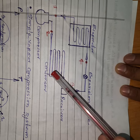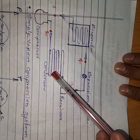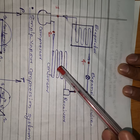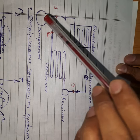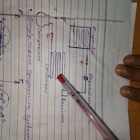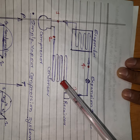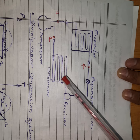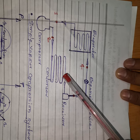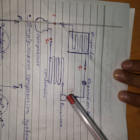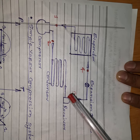In the condenser — either air-cooled or water-cooled — the heat absorbed in the evaporator and the heat added in the compressor is rejected to the atmosphere. There is a phase change in the condenser: vapor refrigerant is converted into liquid refrigerant. Leaving the condenser, it is high pressure, normal temperature liquid refrigerant.